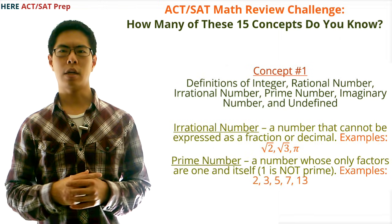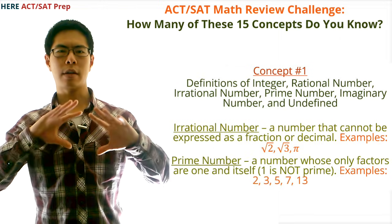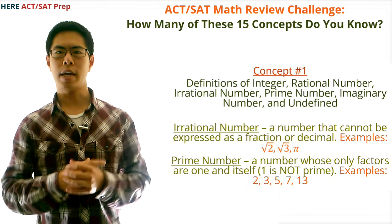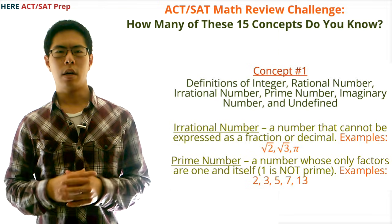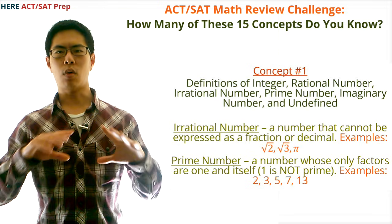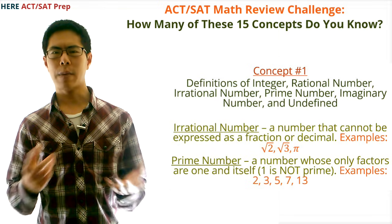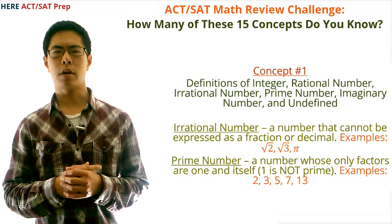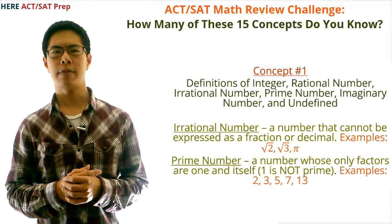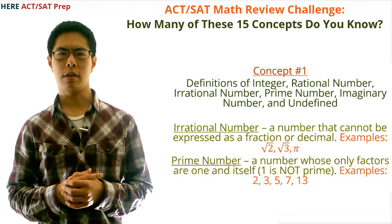Fourth, a prime number is a number whose only factors are one and itself. A note to keep in mind is that one is not a prime number. Examples of prime numbers are two, three, five, seven, and thirteen.